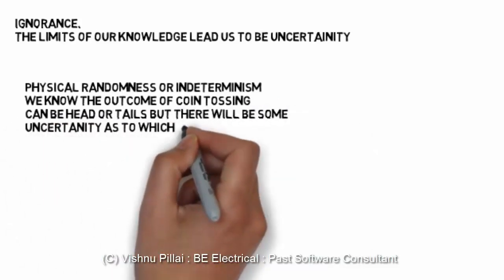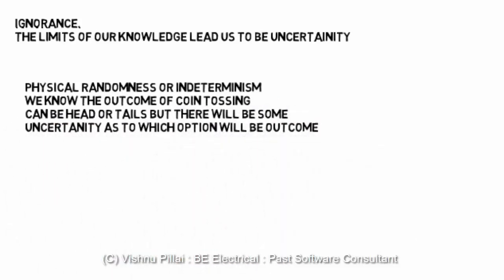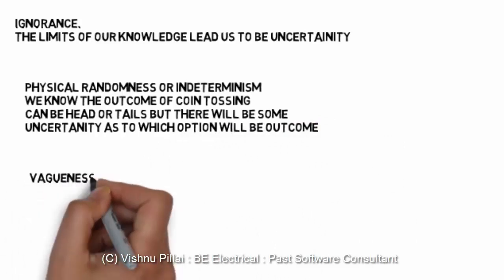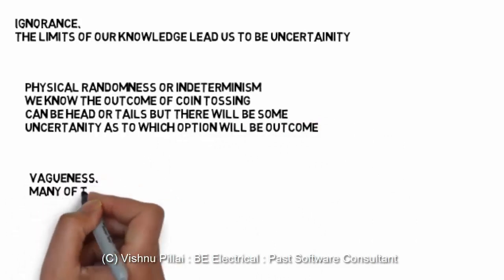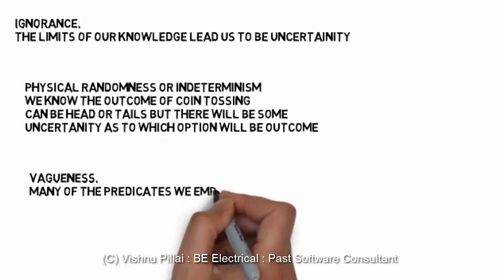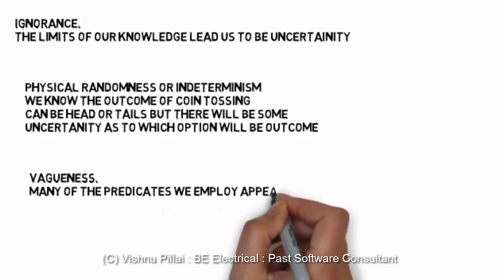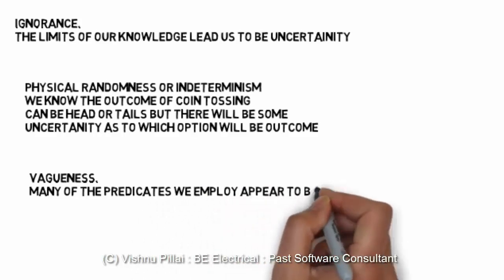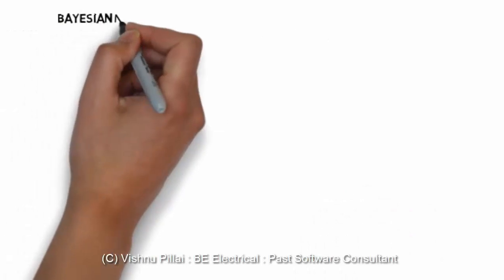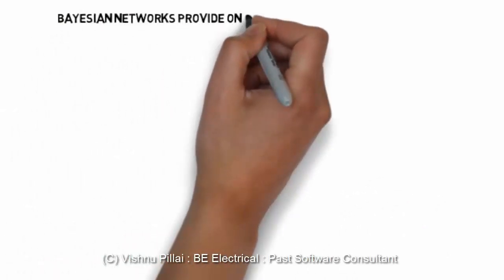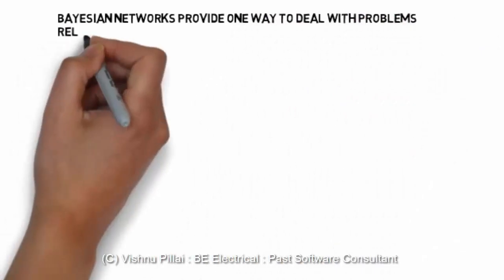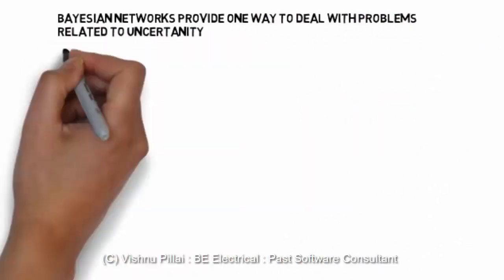Another source of uncertainty is physical randomness or indeterminism. For example, we know the outcome of a coin toss can be heads or tails, but there is uncertainty as to which will occur. Such factors — ignorance, physical randomness, and vagueness, where many predicates employed appear to be vague — all lead to uncertainty.